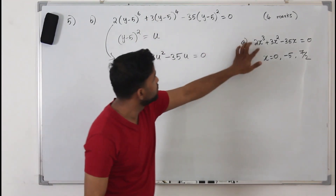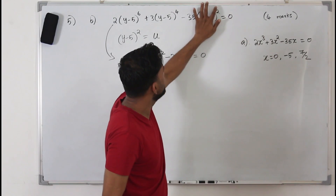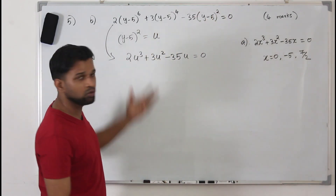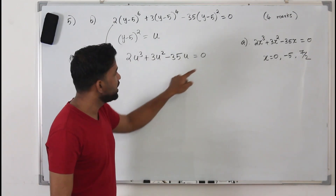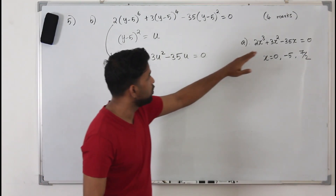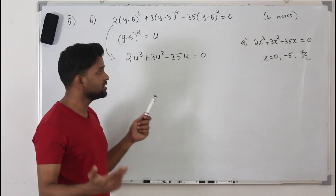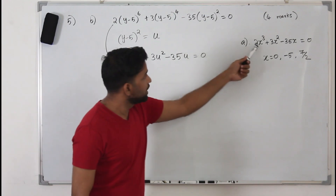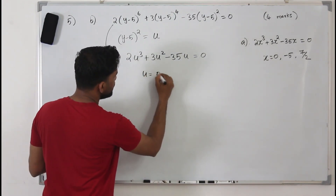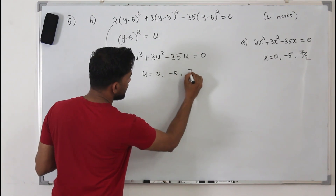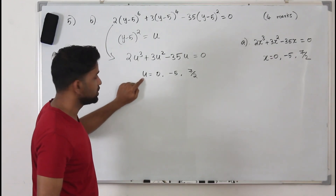By comparing the two, whatever I have in Part B I take as U. So when I convert the Part B equation it becomes the same cubic equation as Part A. You don't need to solve it again — that wastes time. Just use the result: U = 0, U = -5, and U = 7/2.